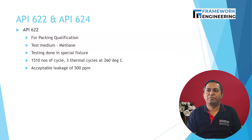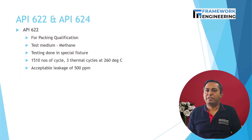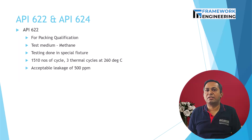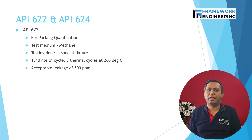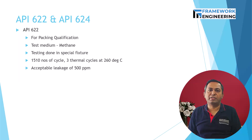The next standards are API 622 and API 624. API 622 refers only to packing qualification. The test media is methane and testing is done in a special fixture — not on a valve itself. 1510 cycles are performed along with 3 thermal cycles at 260 degrees centigrade, with an acceptable leakage of 500 PPM with no packing adjustment.